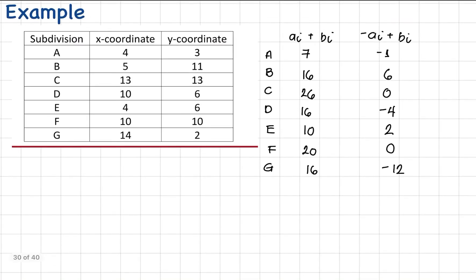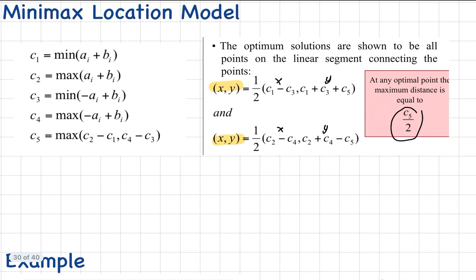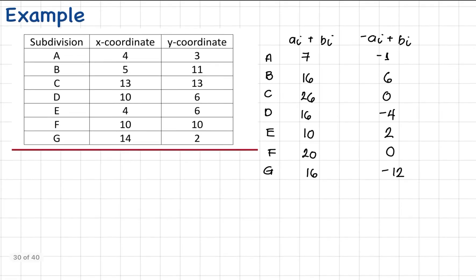Once we know the following value, we can now identify the values of C1, C2, C3, C4, and C5. C1 is the minimum value in A plus B, the minimum value in the first column. So our C1, the minimum value is 7.